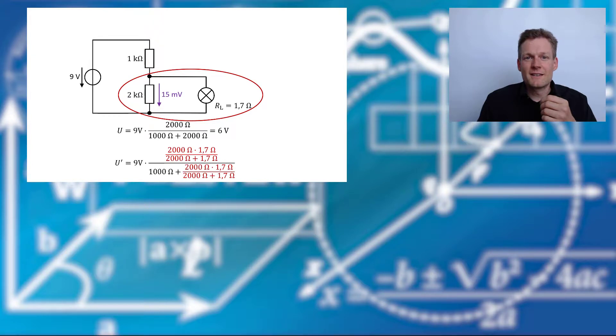In red here is the equation for two resistors in parallel. So, the 2 kOhm in parallel to 1.7 Ohm. And, yeah, if I calculate these values, this leads me to our 15 millivolt.